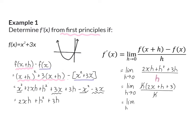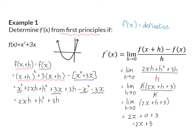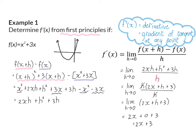Now we can calculate the limit as h approaches 0 of 2x plus h plus 3. To calculate this limit we need to substitute h with 0, so we will have 2x plus 0 plus 3. This means that our derivative, or f prime of x, is 2x plus 3. I'm reminding you that f prime of x is also called the derivative and that it calculates the gradient of the tangent at any point on a function.